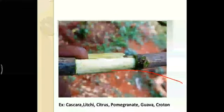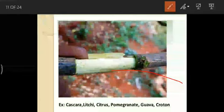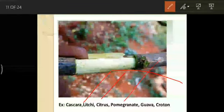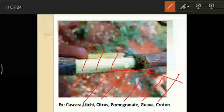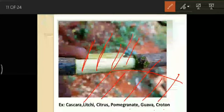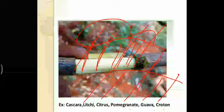Examples of air layering: lychee, Cascara, citrus, pomegranate, guava, and croton. Remember: citrus, croton, pomegranate, guava — and lychee on top of all these. So citrus, pomegranate, guava, croton, and lychee are the examples for air layering.